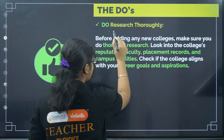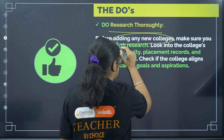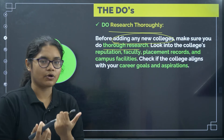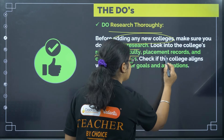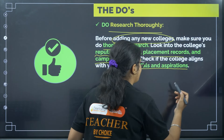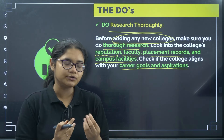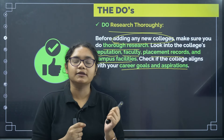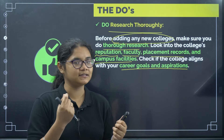Before adding any new college, make sure you do thorough research. Look at that particular college across different factors — for example, the reputation of the college, the faculty, placement record, and campus facilities. Check if the college aligns with your career goals and aspirations, and whether the course you want to study is available there. Check if the faculties are good and if the placement records are good. These are things you must consider.